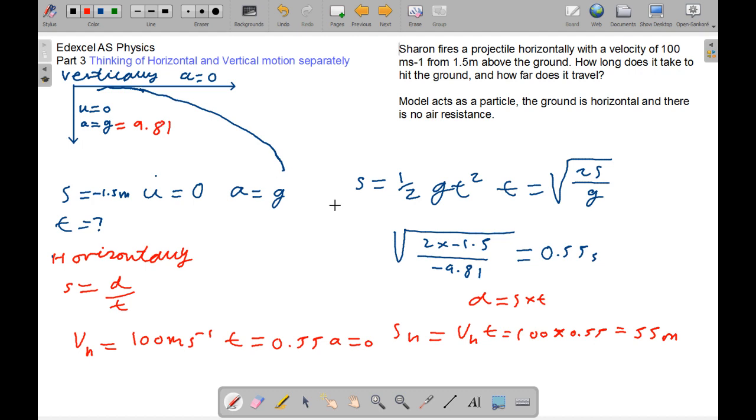So, vertically, we can rewrite s equals half gt squared, to make t equals the square root of 2s over g. And then, we can write 2 times minus 1.5, all over minus 9.81, to equal 0.55 seconds. So, the model hits the ground after 0.55 seconds.